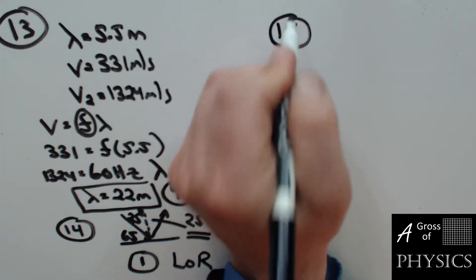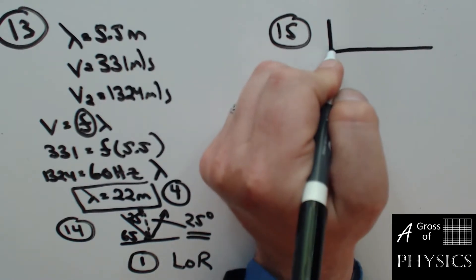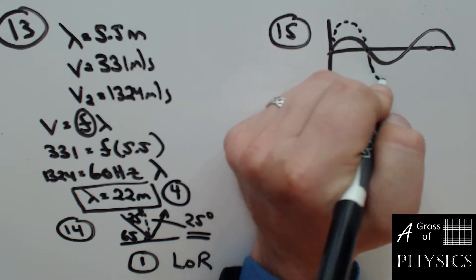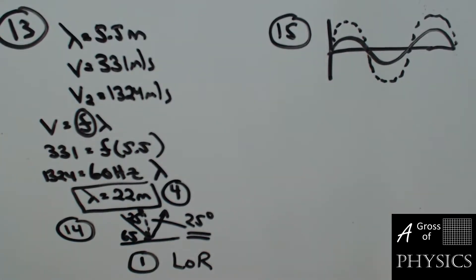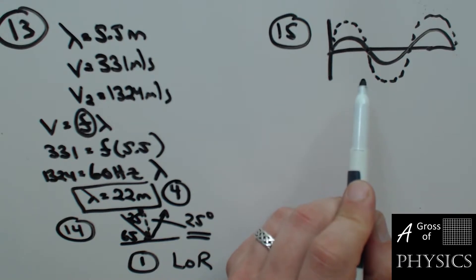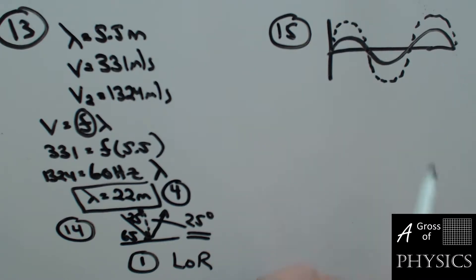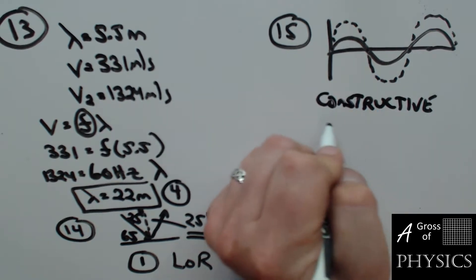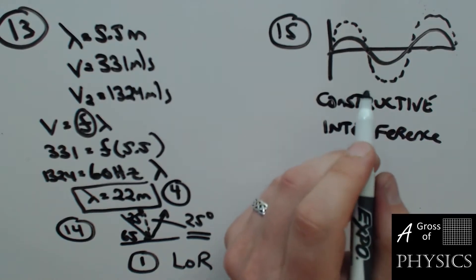Number 15: we have two waves traveling effectively on top of one another — a solid wave and a dotted wave. It's asking what type of interaction we're looking at. If these two interact together, they're going to make a bigger wave at each spot. We call that constructive interference. That's choice two.